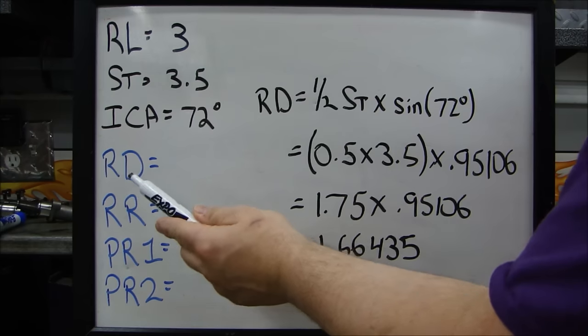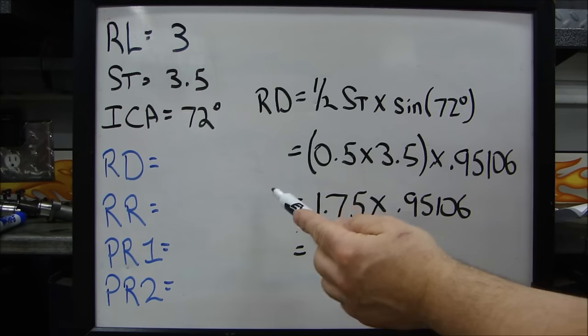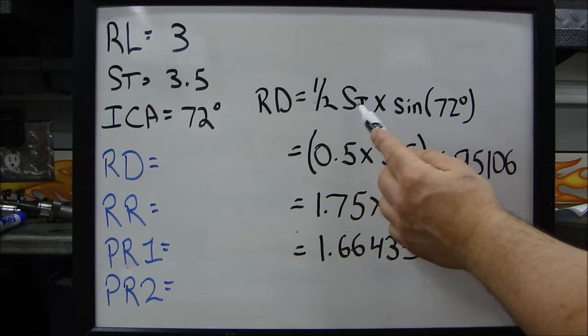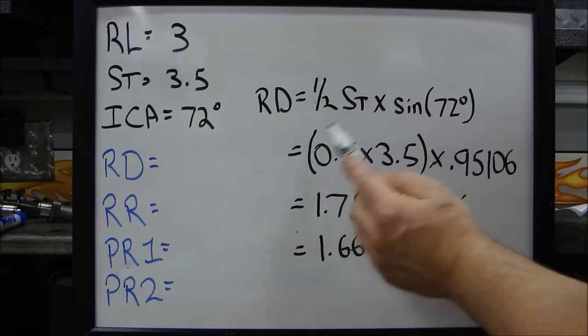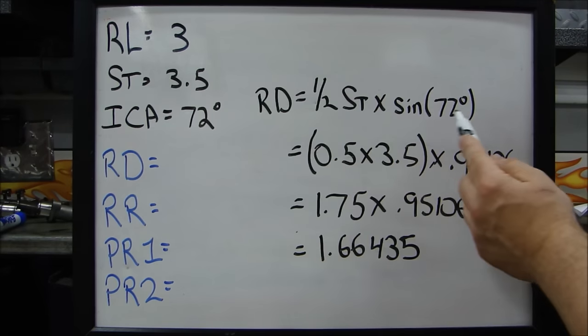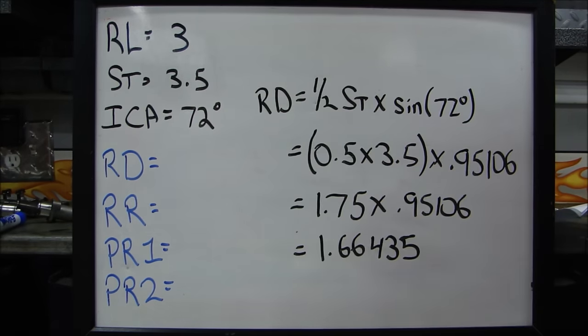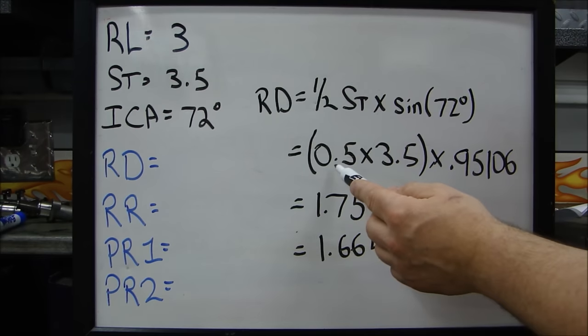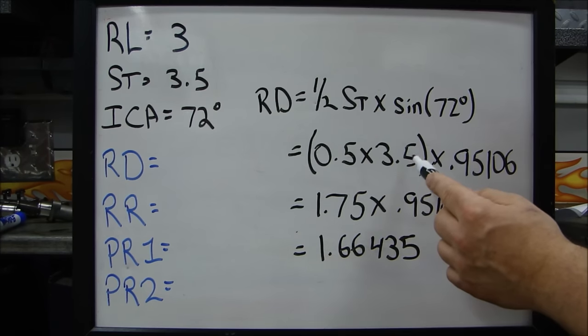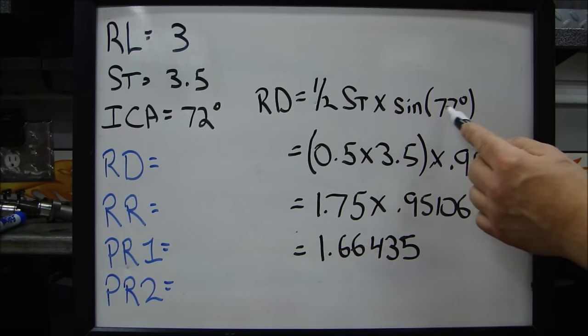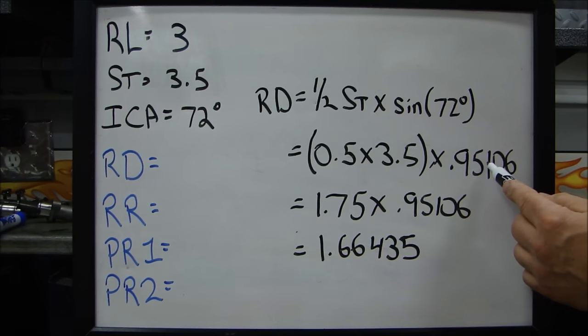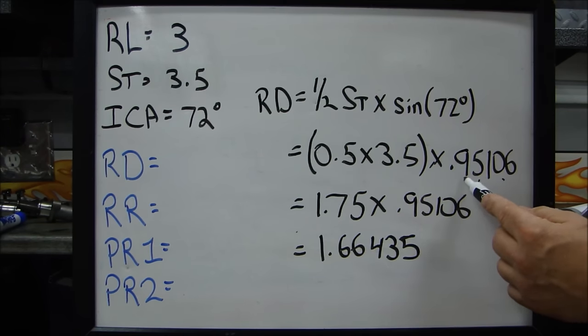Now, the first number we're going to calculate is RD. And RD is one half the stroke times the sine of the 72 degree angle. So it's one half of the stroke times the sine of our installed centerline angle of the camshaft. That comes out to, which is one half is 0.5 times 3.5 times the sine of 72 is 0.95106. You notice 1, 2, 3, 4, 5.